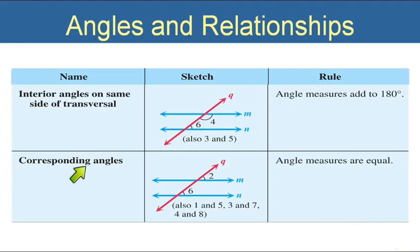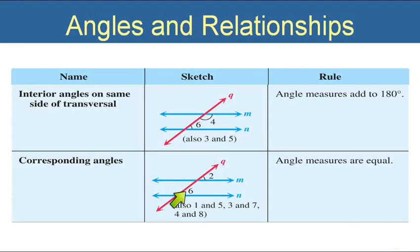We can also talk about corresponding angles, which are angles in the same position but on different parallel lines. Angle 2 and angle 6 are corresponding and they are equal. We could also have angle 1 and angle 5 as another pair of corresponding angles, and therefore they would also be equal.